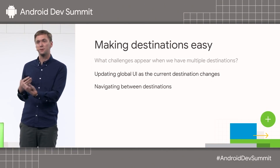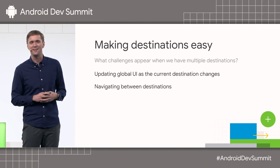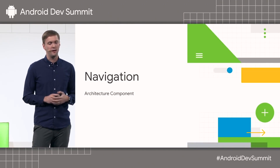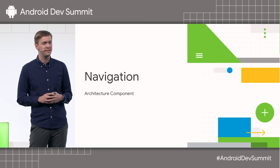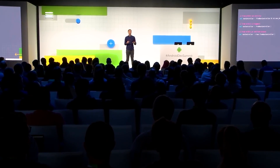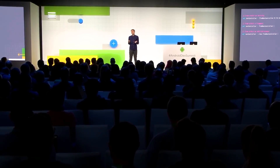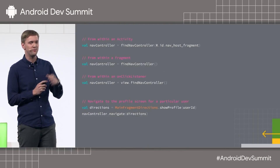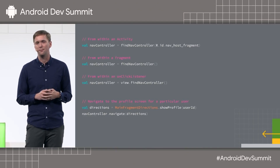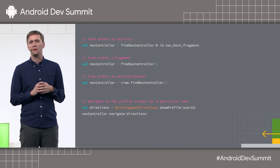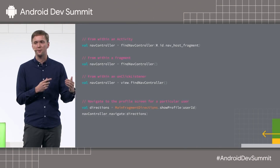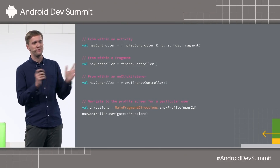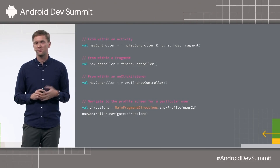Also, navigating between destinations — that startActivity, ActivityCompat thing. Can we make that even easier? So we started the Navigation Architecture Component and introduced it at IO in 2018. If you have arguments to pass, we built a Gradle plugin called SafeArgs, which for every destination in your graph generates a directions object with a simple showProfile method — giving you type-safe arguments that you define in your navigation graph. Then you just call navigate, and we take care of all the fragment transactions for you.